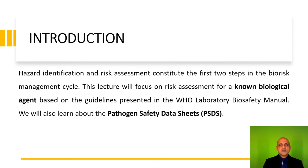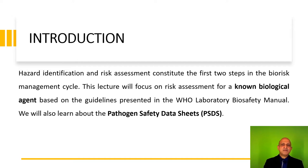My earlier lectures focused on the AMP cycle, which is the risk assessment, risk mitigation and performance assessment cycle. During the process of risk assessment we commence with hazard identification. However we also need specific guidelines. With this in mind I have delved into the WHO Laboratory Biosafety Manual in an earlier lecture, and in this lecture we will be delving into the pathogen safety data sheets, which is a very useful document for biorisk managers.